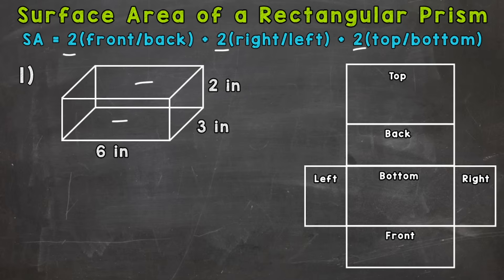Same with right and left. We can find the area of the right face and then multiply it by 2 because the left is the exact same as the right. Same with top and bottom. So let's get into finding the surface area here.